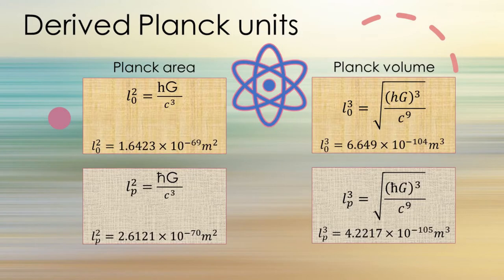Here are several derived Planck units: Planck area and Planck volume. Planck area is the square of Planck length, and Planck volume is the cube of Planck length. The original Planck unit is on top and the modern unit on the bottom. The difference in Planck areas is a factor of 2π, because it is the square of the square root of 2π. With Planck volume, they differ by the cube of the square root of 2π.